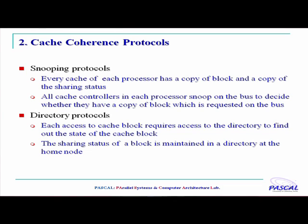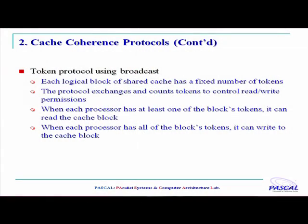There are directory protocols where a central directory element is able to make this determination for all the processors. And there are the token protocols that use broadcasts, where some tokens are allocated to blocks of shared cache. Those tokens are given to processors, and when a processor has one of the block's tokens, it can perform read operations. When a processor has all of the block's tokens, it can do write operations as well.